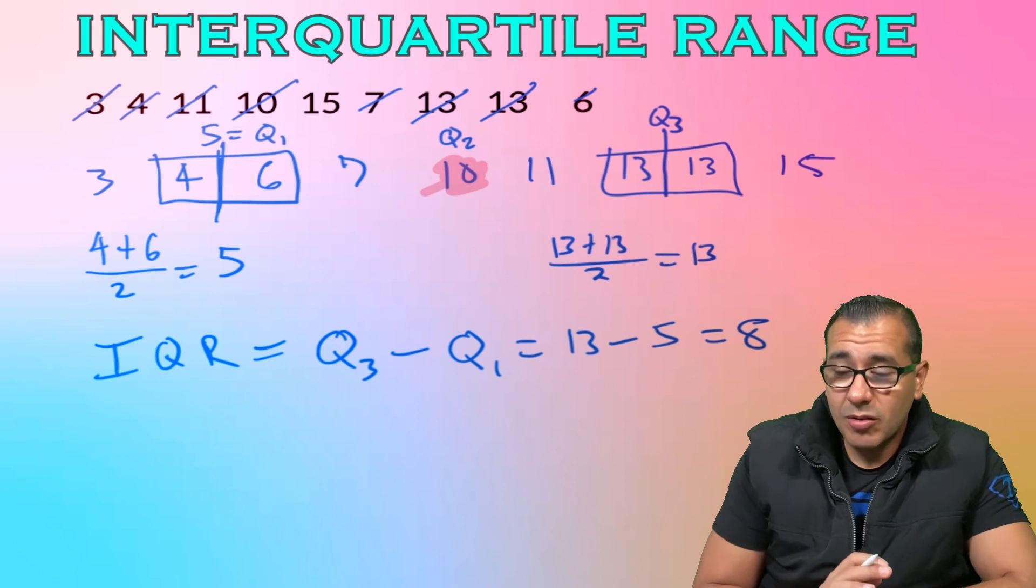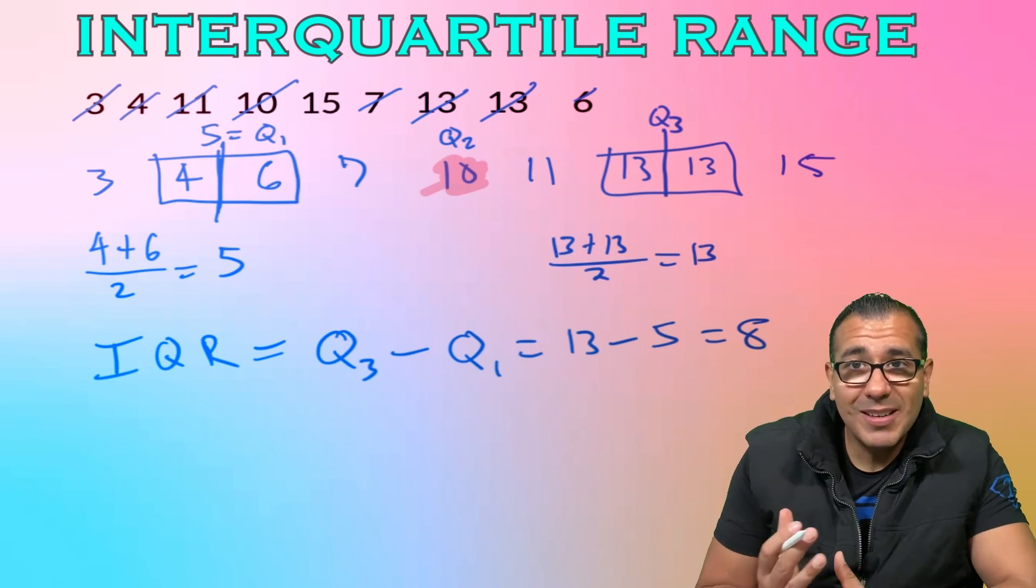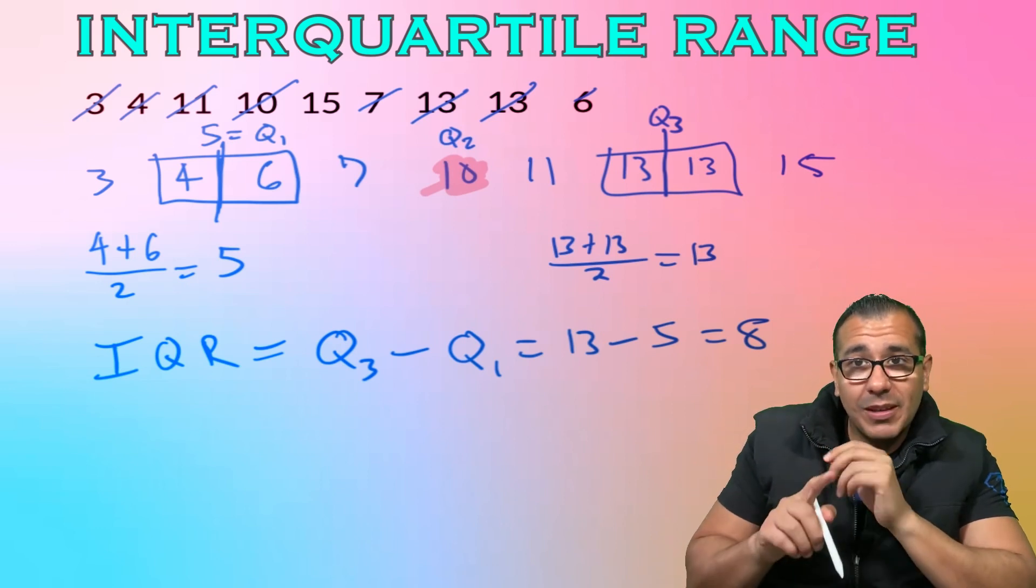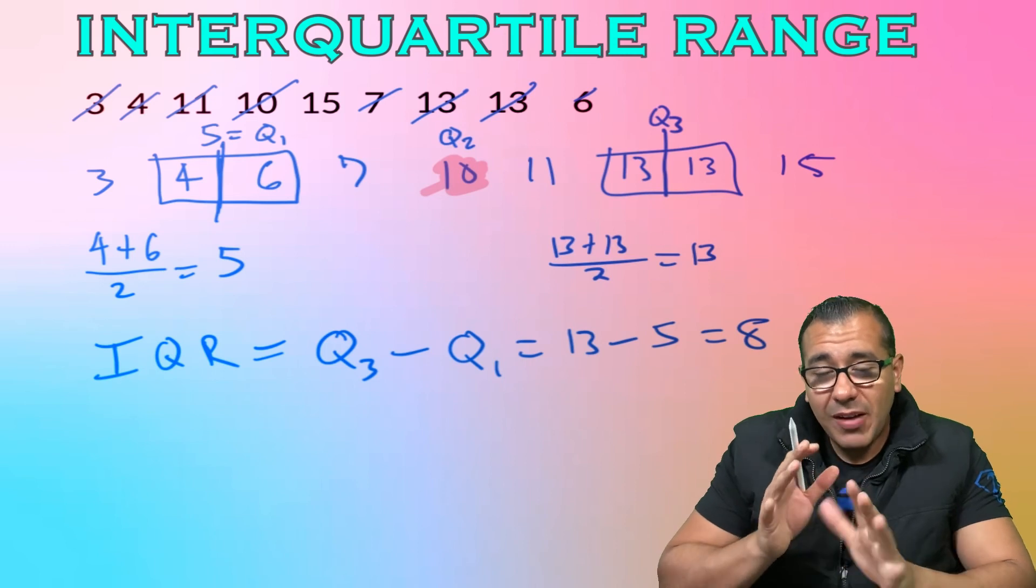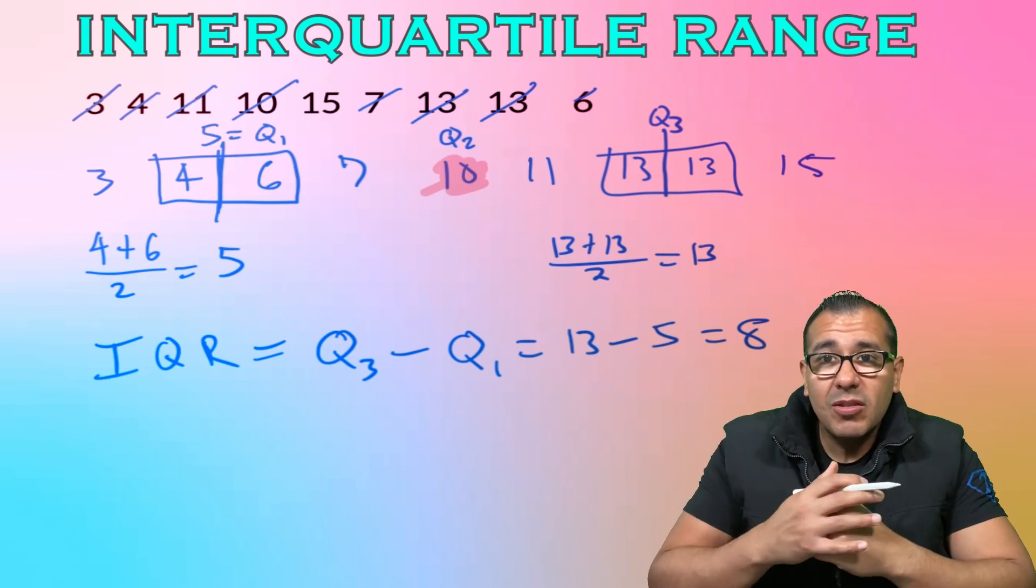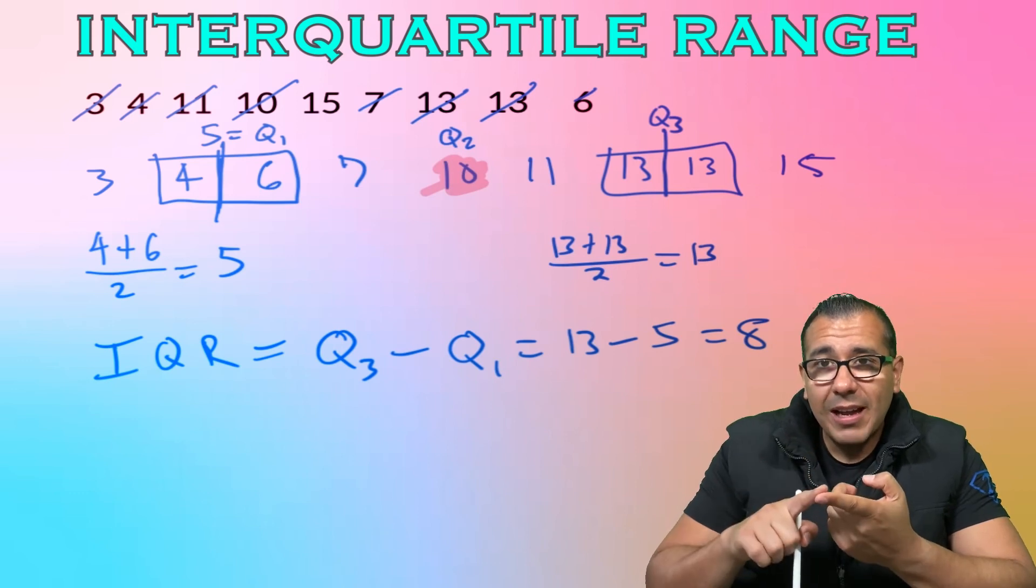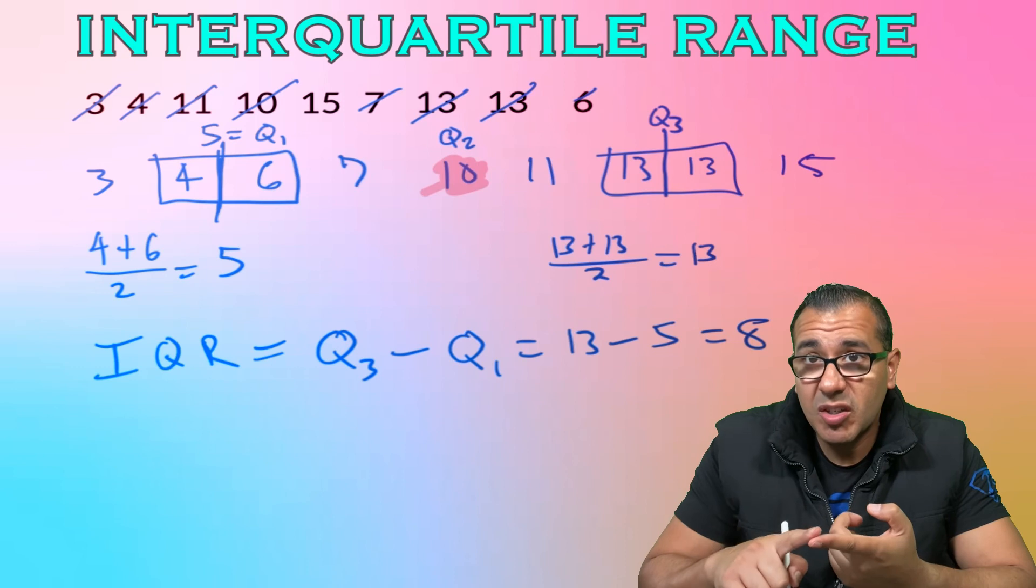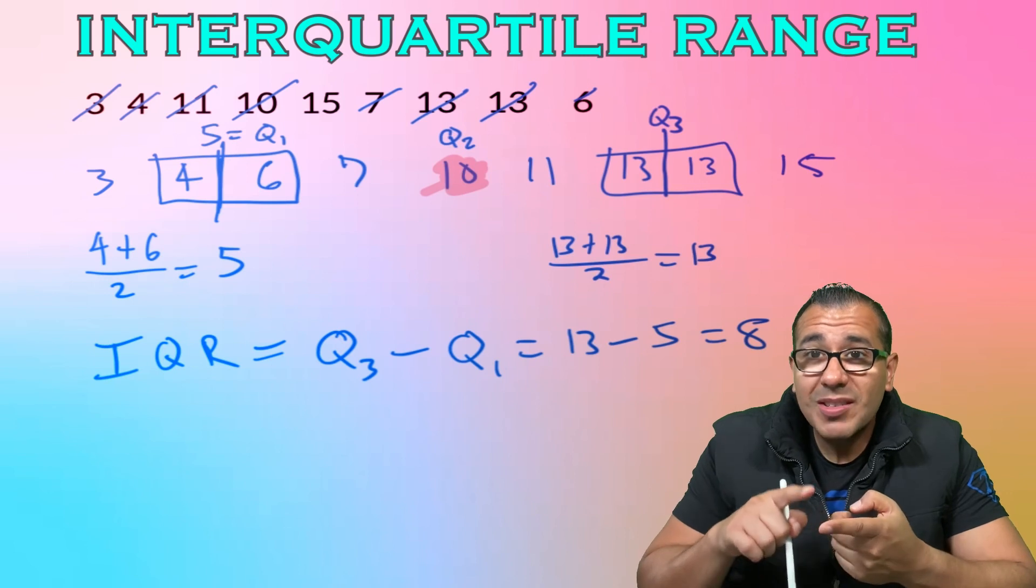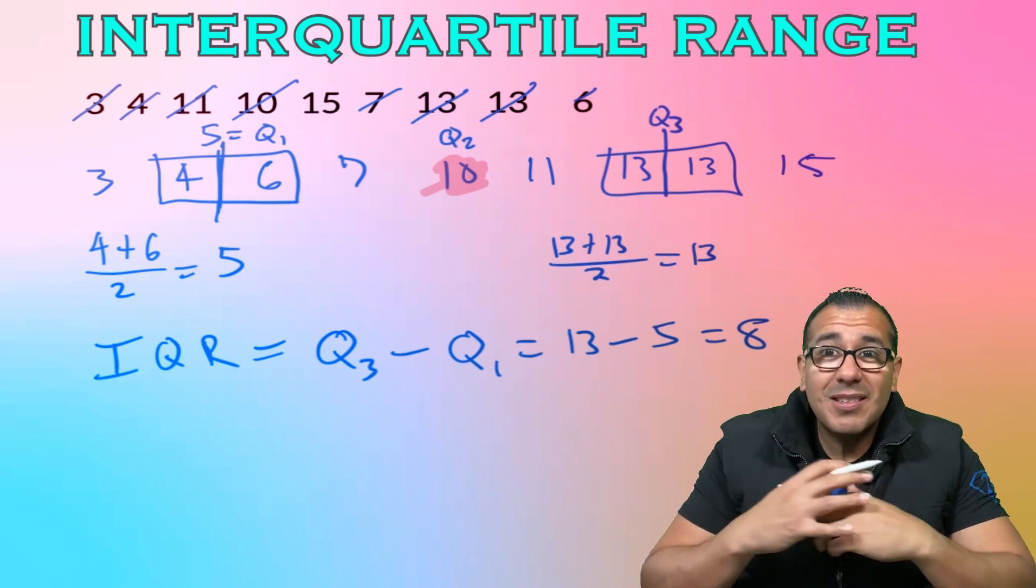Now all we do is subtract those two, so we get eight. When you subtract those two, this eight represents that interquartile range. But is it as useful as we want it to be right now? No. What we're going to do in future videos, when you look at our five number summary and box plots, you'll see that the IQR is really used for something bigger. It's used to find outliers, looking at data points that might be suspicious.